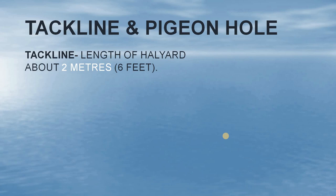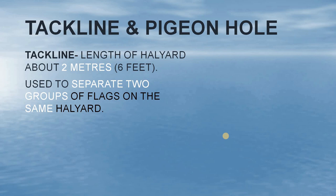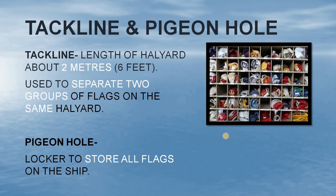Now we have tack line and pigeonhole. Tack line is a length of halyard about two meters or six feet. It is used to separate two groups of flags on the same halyard. So if you want to hoist two groups of flags on the same halyard, you can do so using a tack line. Pigeonhole is the locker used to store all flags on the ship — you can see this locker here, which is called the pigeonhole.